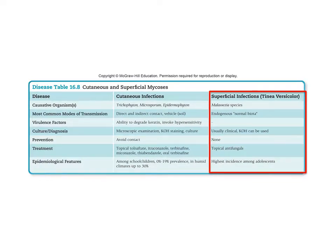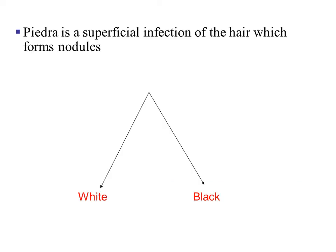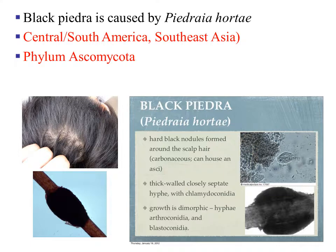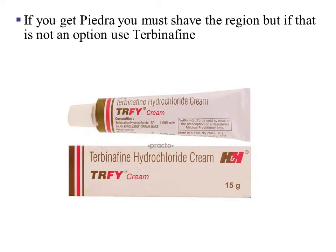Table 16.8 summarizes superficial infections. Another superficial infection is caused by piedra. Piedra is going to affect the hair by forming nodules, and the nodules will either be white or black. White piedra is caused by the fungus Trichosporon. Notice in the image you can see a soft white to light brown nodule growing on the hair. Black piedra is caused by a different fungus. If you get piedra, you must shave the region, but if that is not an option, you can use an antifungal drug.